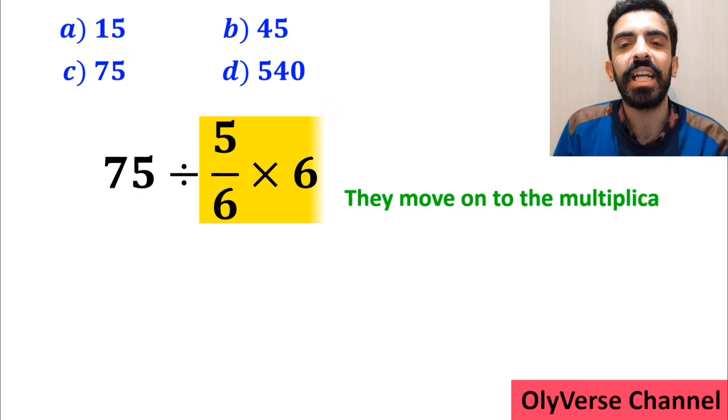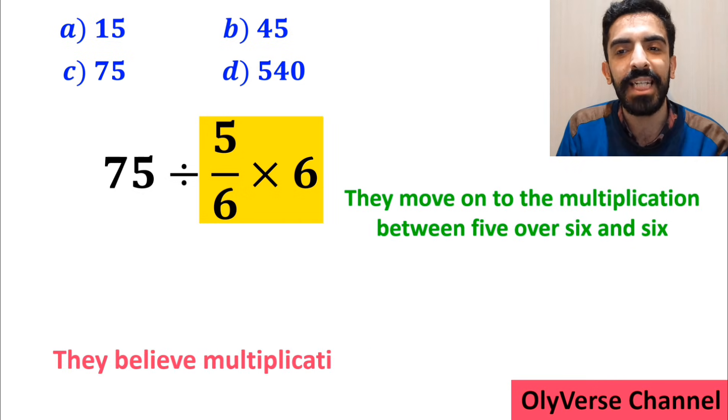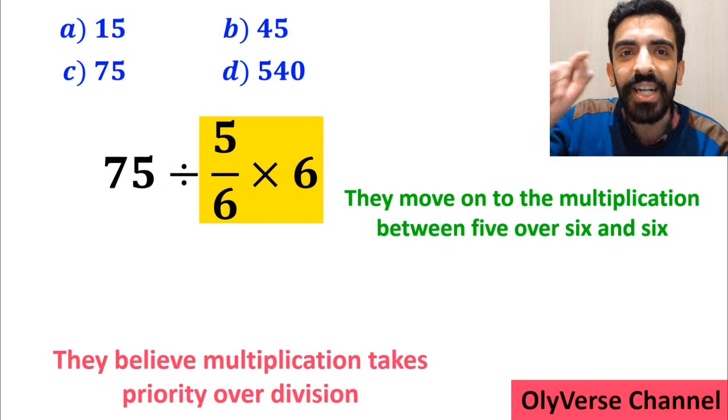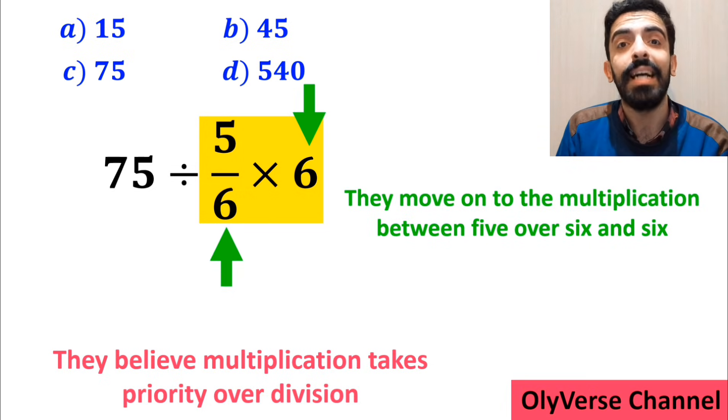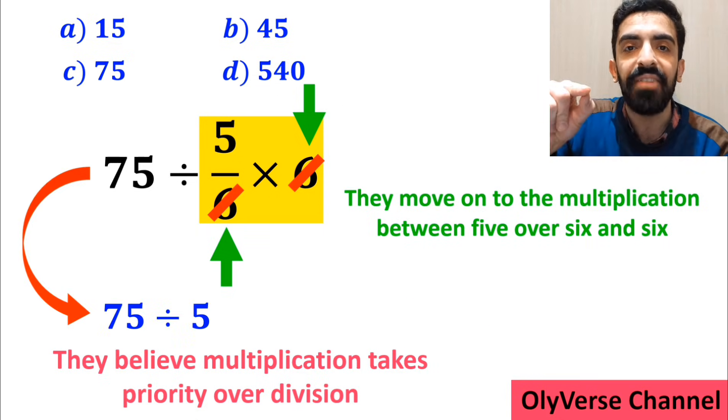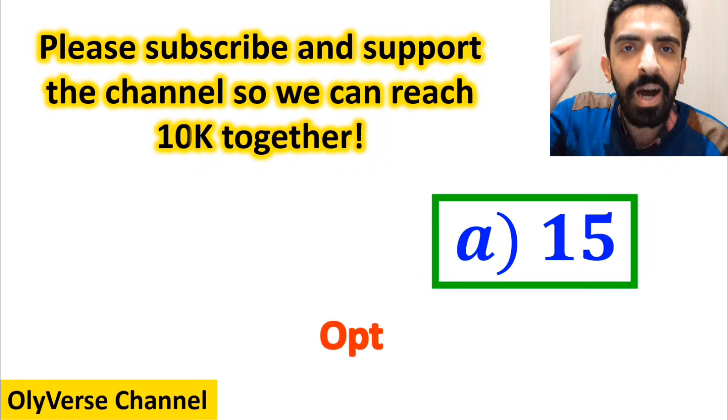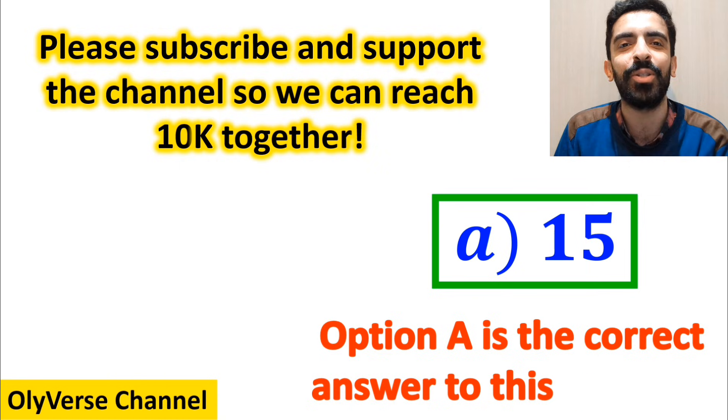Then, they move on to the multiplication between 5 over 6 and 6 because they believe multiplication takes priority over division. As you can see on the screen, they simplify the number 6 with the 6 in the denominator. And instead of the original expression, they write 75 divided by 5, which finally gives them the answer 15. And they conclude that option A is the correct answer to this question.